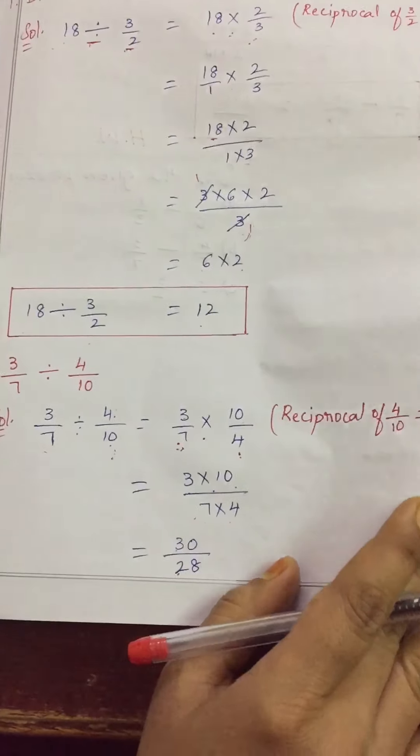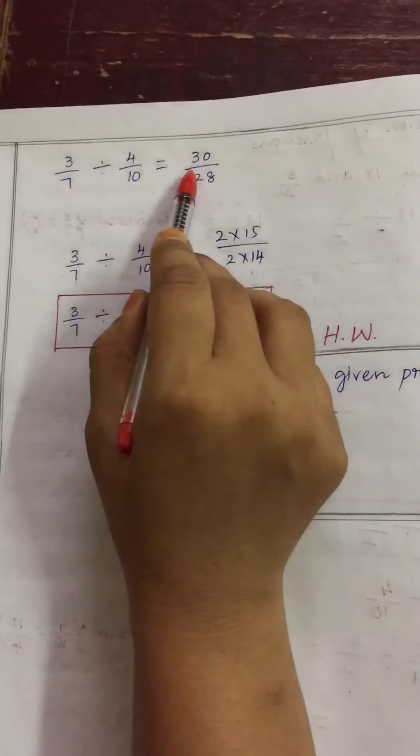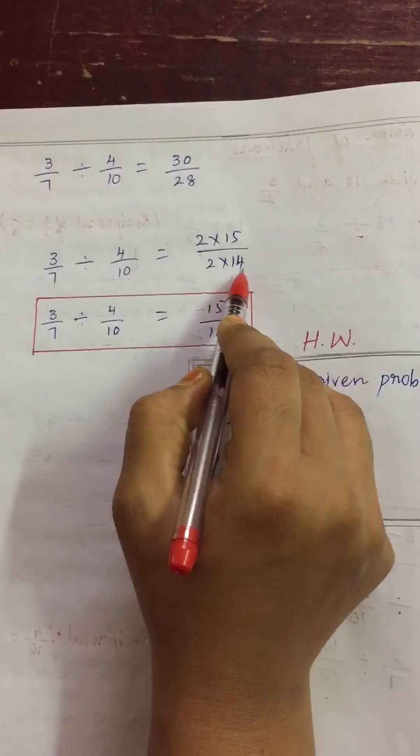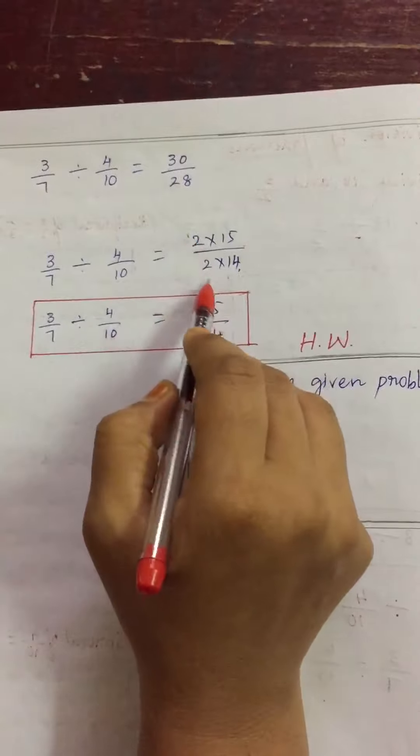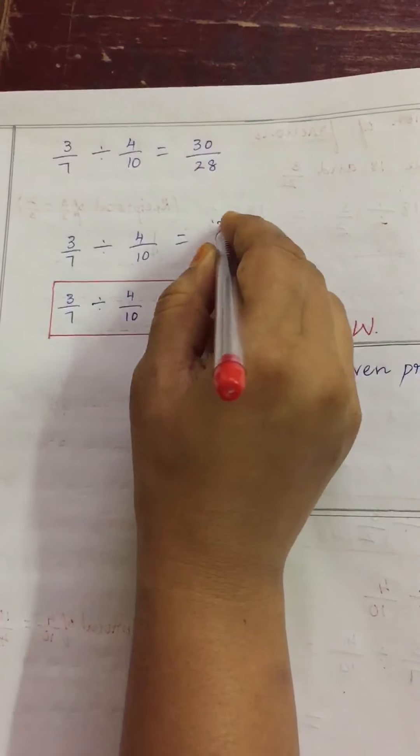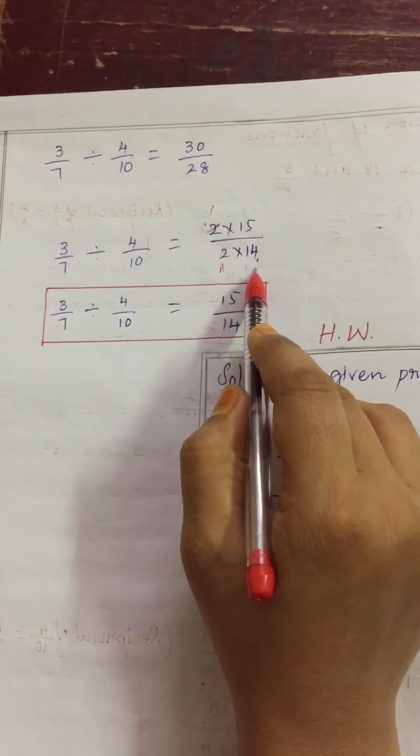We can multiply directly or we can split the numbers into two different numbers. Here 30 by 28 I am writing into two different numbers. 30, 2 times 15 is 30 and 28, 2 times 14 is 28. Numerator and denominator same 2 we got. We can cancel this. 2 ones and 2 ones, remainder is 15 and 14.